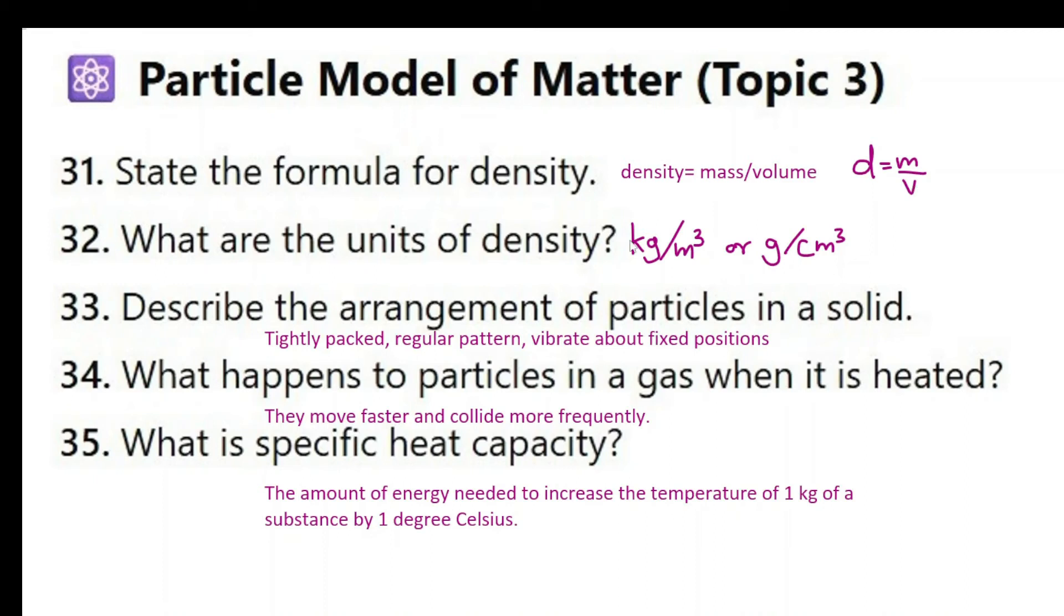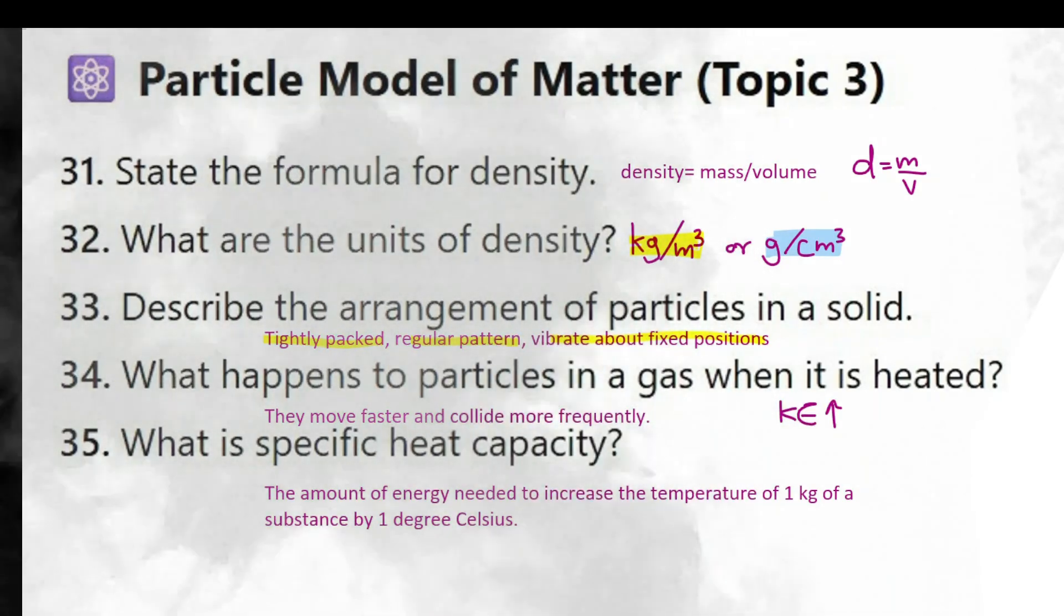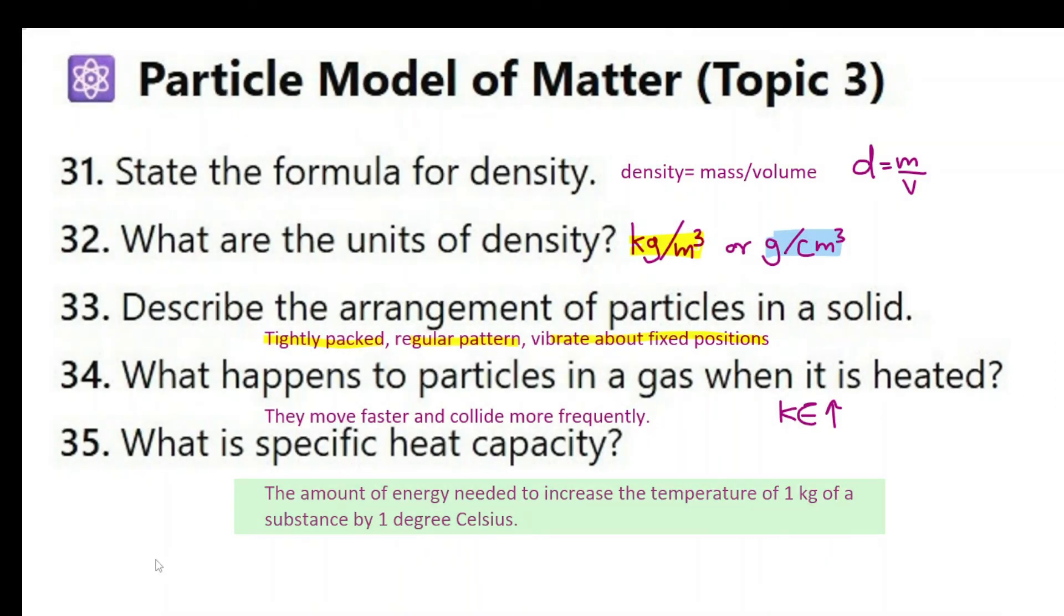What are the units of density? Density can be measured either in kilograms per cubic meter or grams per cubic centimeter. Describe the arrangement of particles in a solid. They are tightly packed, regular pattern, vibrate about fixed positions. What happens to particles in a gas when it is heated? Now when gas particles are heated they gain kinetic energy. So the kinetic energy increases which means they move faster and they collide more frequently. There will be harder and more frequent collisions. What is specific heat capacity? The amount of energy needed to increase the temperature of one kilogram of a substance by one degree Celsius.